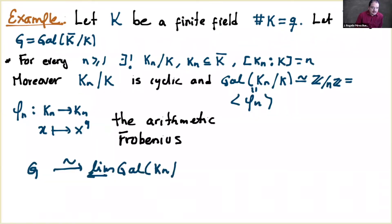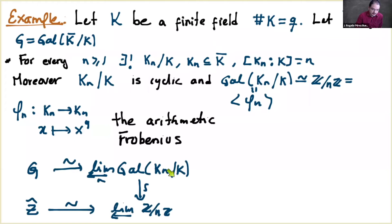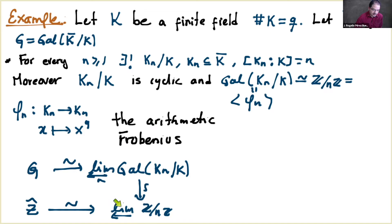Since all Galois extensions of K are finite Galois extensions, the absolute Galois group is the projective limit of the groups ℤ/nℤ. This projective limit is isomorphic to ℤ-hat, the profinite integers — the completion of ℤ. Therefore the absolute Galois group Gal(K̄/K) is isomorphic to ℤ-hat.